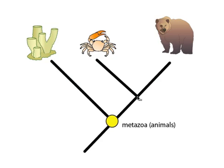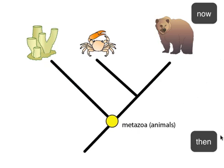Sponges, crabs, and bears are all animals, so the node where the crab plus bear lineage meets up with the sponge lineage is marked with a yellow dot and labeled metazoan, which is a term scientists use to refer to animals. Phylogenies also include information about time in them, with the present at the tops or the tips, and the past moving towards the bottom.